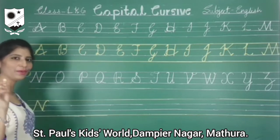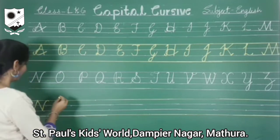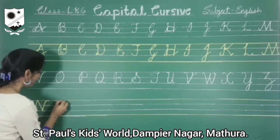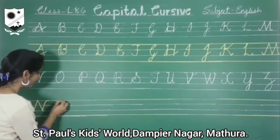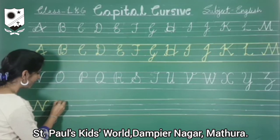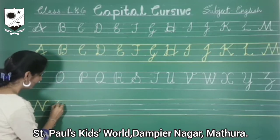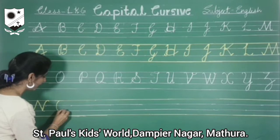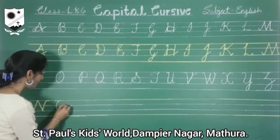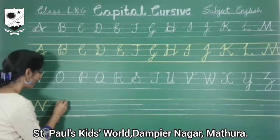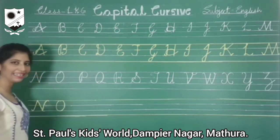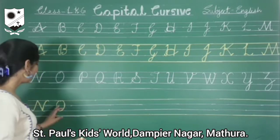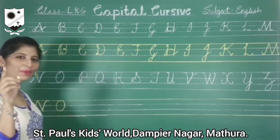Now capital O. Look here. We will start from the first line and come towards the third line. Pick a round and leave it. Capital O.